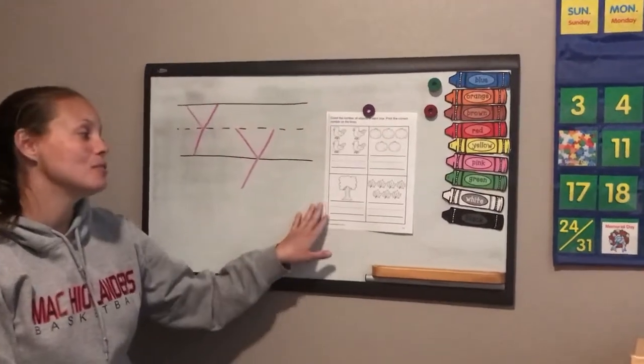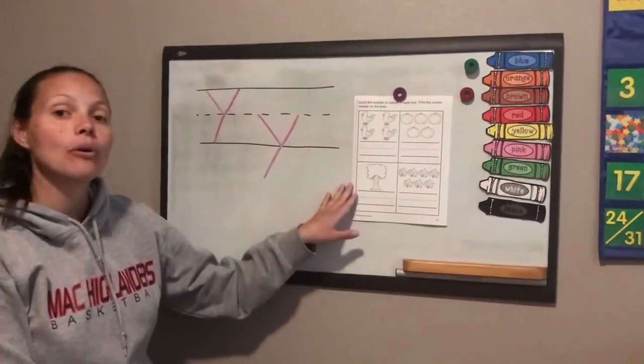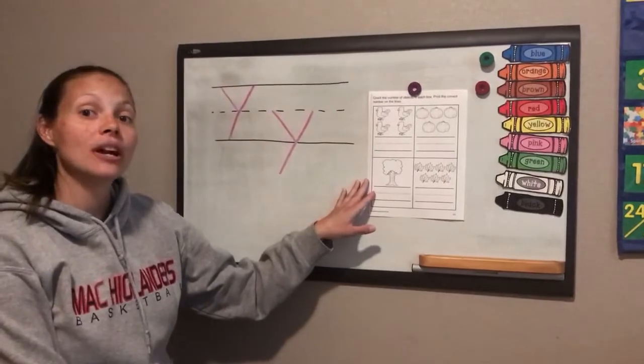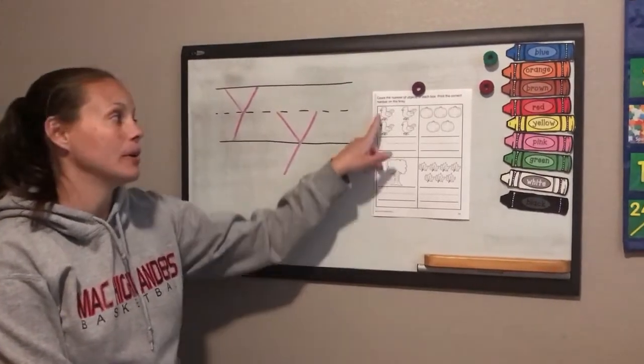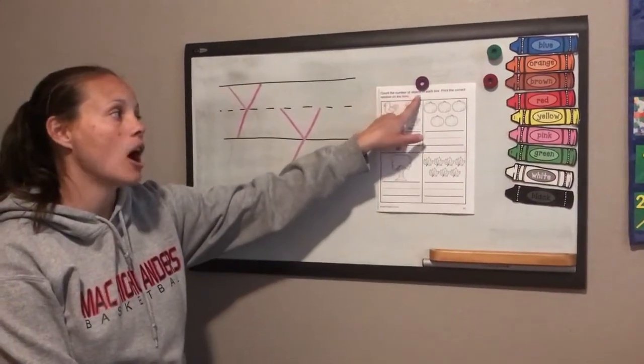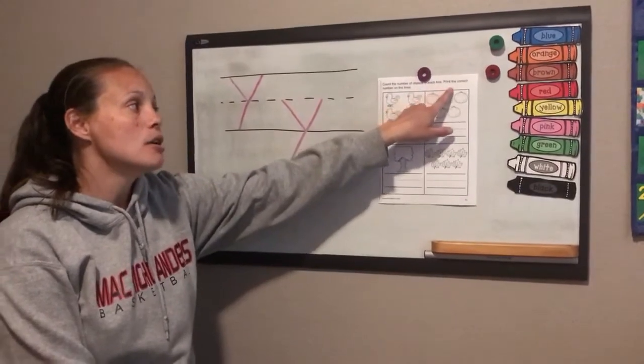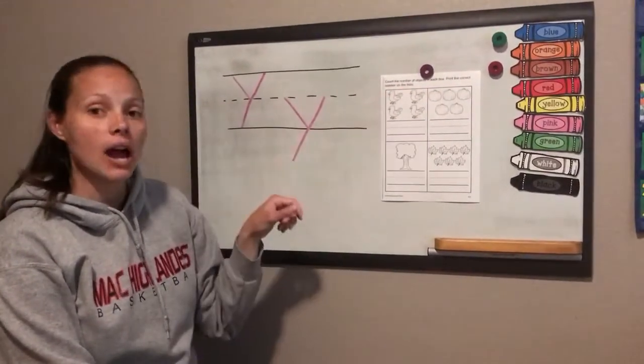All right, we're going to work on this new worksheet. Go ahead and pull it out. We're going to read the directions at the top to see what we're supposed to do. It says count the number of objects in each box. Print the correct number on the lines.